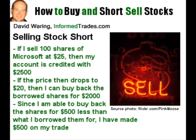Let's look at how this would work with our Microsoft example. Since I think the value of the stock is going to fall from $25 to $20, I sell 100 shares of Microsoft at $25, crediting my account 100 shares times $25 per share, or $2,500. If I am correct and the value of the stock falls from $25 to $20, then I can buy the stock I have borrowed and sold back for 100 shares times the $20 per share price, which amounts to $2,000. As I originally sold the 100 shares at $25 and now I am able to buy the same 100 shares back for $2,000 to replace the shares I have borrowed, I have just made $500 on my trade.